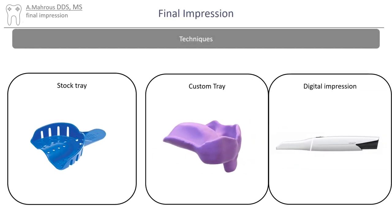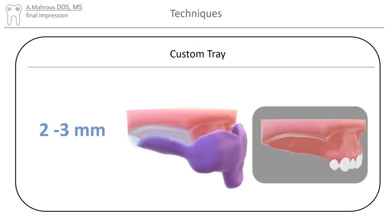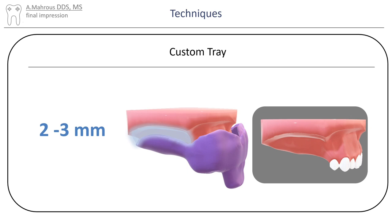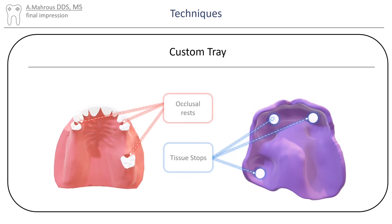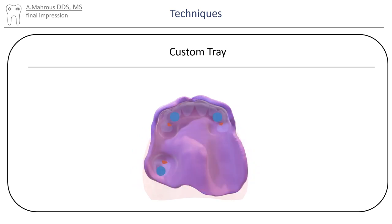Now let's move on to the custom tray. A custom tray can be used to make an impression of any Kennedy classification of RPD. When custom trays are made, they should extend 2 to 3 millimeters shy of the depth of the vestibule where the edentulous segment exists. Occlusal stops should be made on tooth surfaces that are not receiving occlusal rests, and at least three occlusal stops should be made to support the tray during the impression procedure.